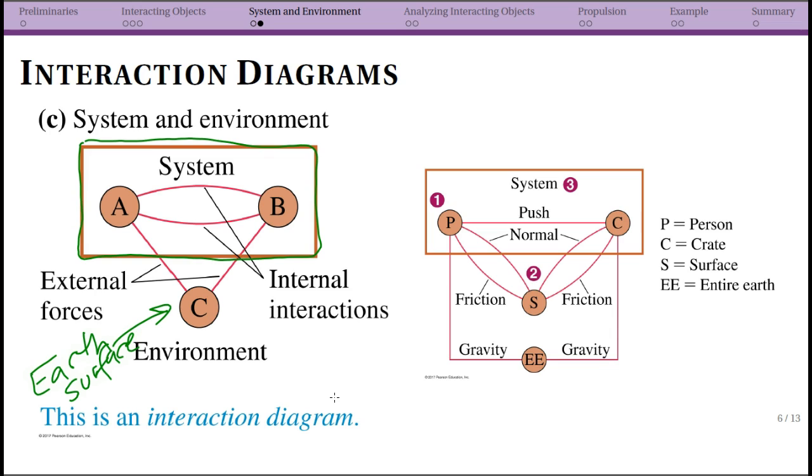So for the person, what we are going to do is go back and actually draw that interaction diagram. So again, that's what we call this—an interaction diagram. And so I said that there was one force that was within my system connecting my person and my crate.